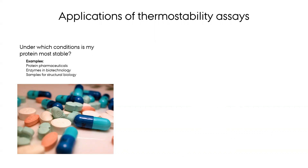Second, in academic research, we often spend a lot of time making our precious samples for use, for example, in structural biology or for mechanistic studies. Again, it's crucial to be able to preserve the integrity of the sample. You can, for example, do this by optimizing the conditions under which you keep your protein, which is what we are going to do in this exercise.